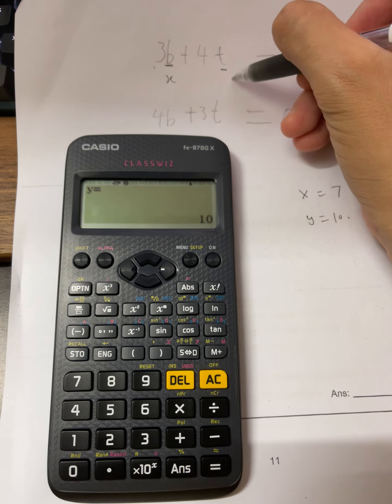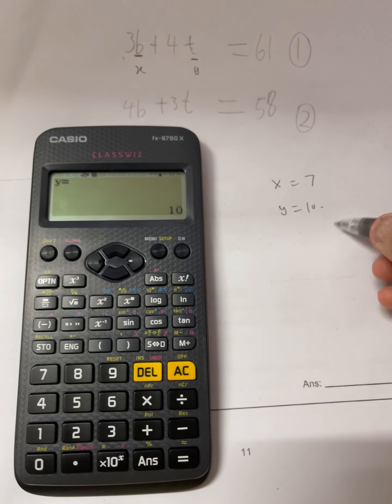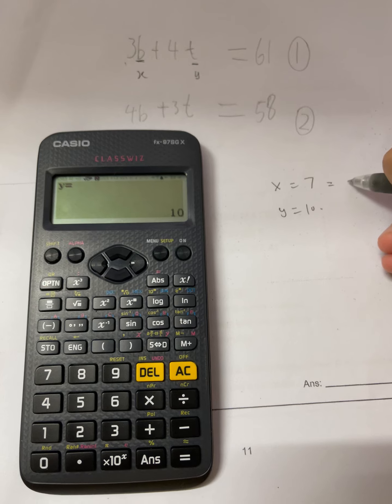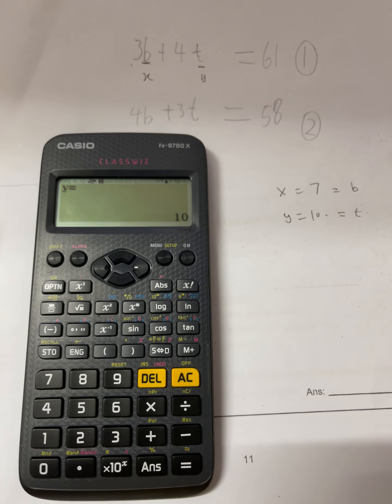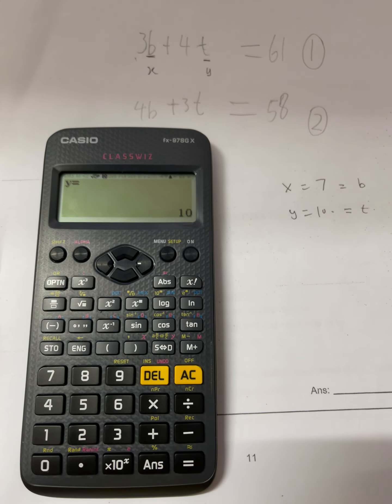So basically this is the x in the calculator, this is the y in the calculator. So therefore your b is equal to seven and your t equal to 10. That's how you use the calculator.